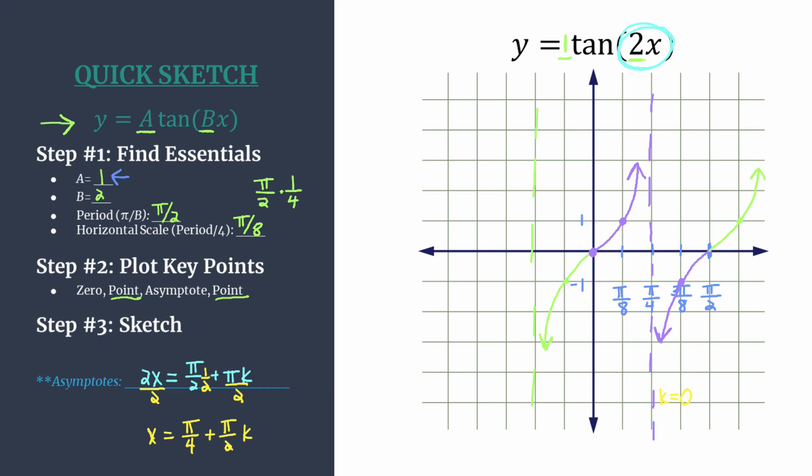Play around with this. Substitute in different integers for k. You can substitute in 1, you'll get the next asymptote to the right, the one that's just off of our grid. If you substitute in k equals negative 1 you'll get this asymptote here at x equals negative pi over 4. And so it's just a really cool way to represent your asymptotes and easily find them. All right so that's all there is to it.